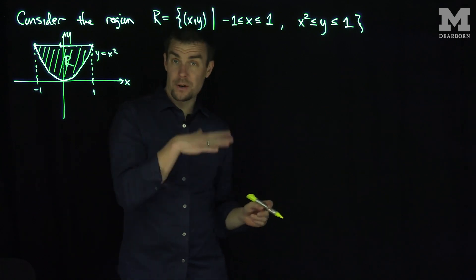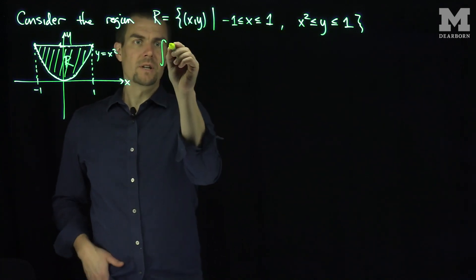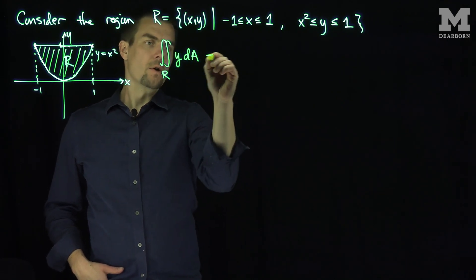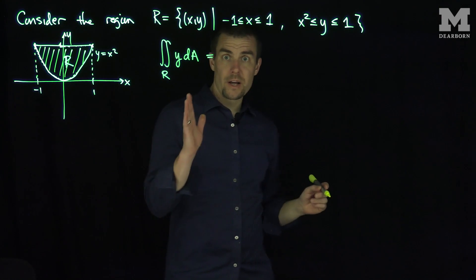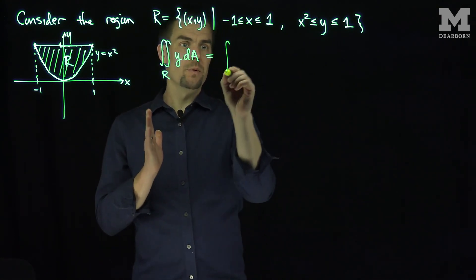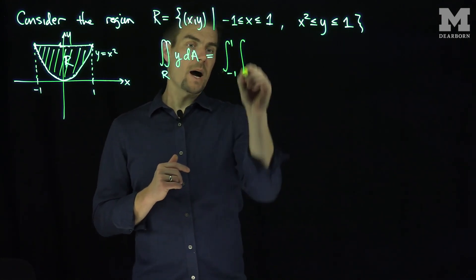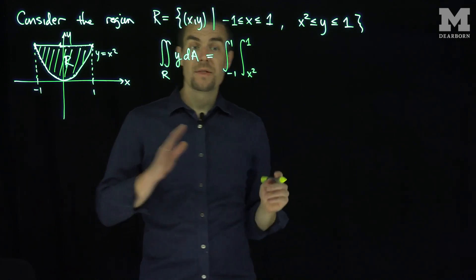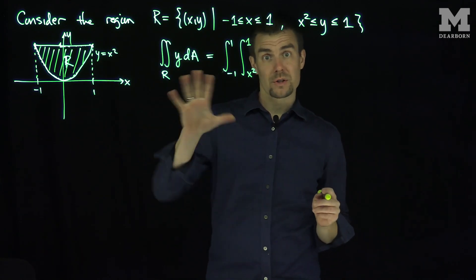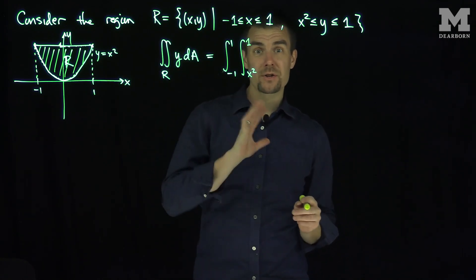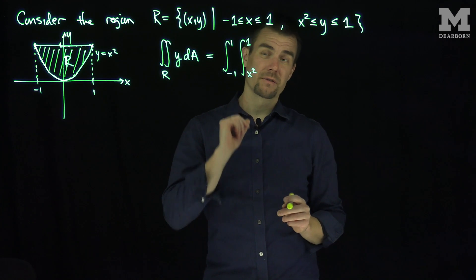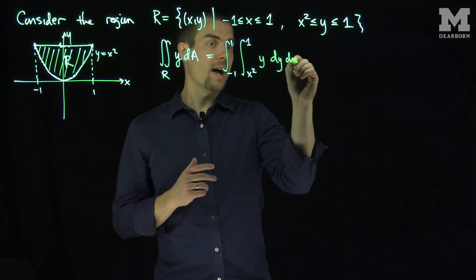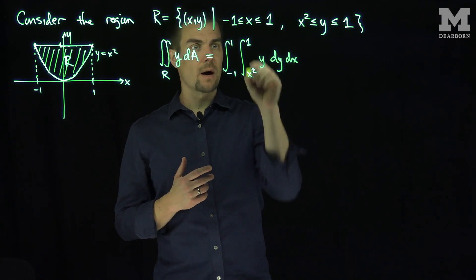Now, if we were to compute an integral over R — say, for example, we wanted to find the double integral over R of a simple function like y dA — we could do an iterated integral. We could say that x goes between negative 1 and 1, and y goes between x squared and 1. I'm not integrating over a rectangle; I'm integrating over this parabolic region. My limits of integration are no longer constants — they involve functions of x. I integrate y first, then do the y limits, then the x limits, because the y limits are allowed to depend on x.